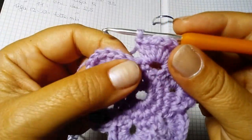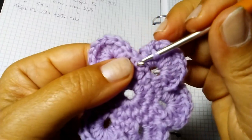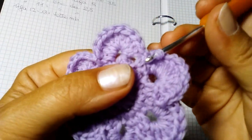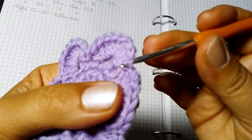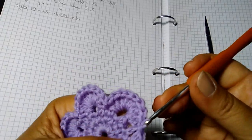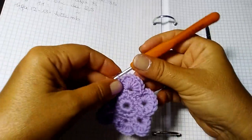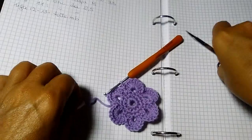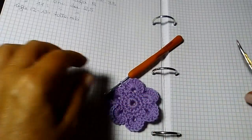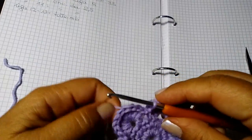Alla fine del giro, dopo aver riempito l'ultimo petalo, chiudete con una maglia bassissima nella seconda maglia bassa qui sotto. E a questo punto il fiore è completato e potete tagliare e fissare il filo.